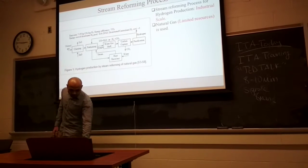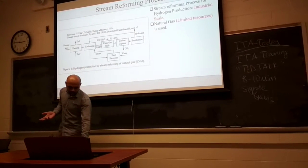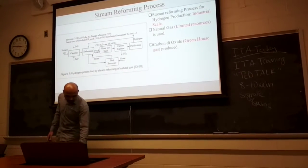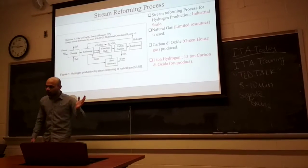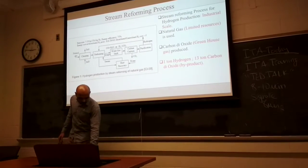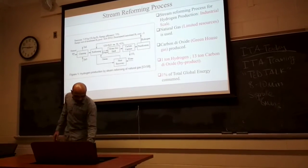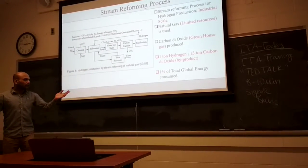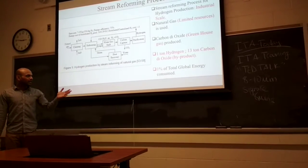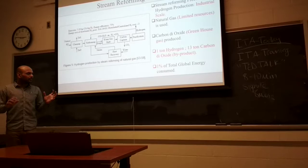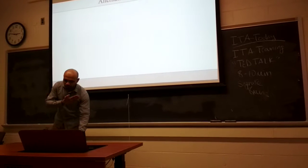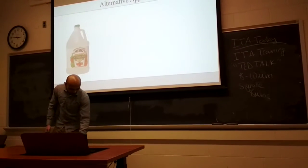The natural gas will one day be totally used up, so we need to think ahead. Carbon dioxide is a greenhouse gas, and if you want to produce one ton of hydrogen in this process, you need to produce 13 tons of carbon dioxide — that is not good for our environment. Also, the energy consumed globally, a significant portion goes to this process. But still, people are following this process because ammonia is very important.